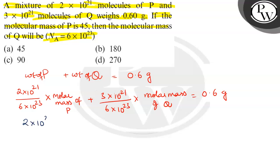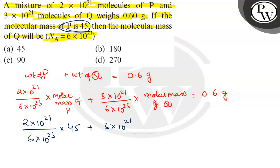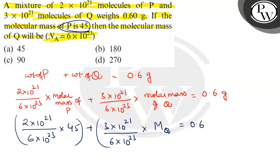So we have: 2 into 10 power 21 divided by 6 into 10 power 23 into molar mass of P, plus 3 into 10 power 21 divided by 6 into 10 power 23 into molar mass of Q — this is what we need to find out. The sum is equal to 0.6. On solving both terms, we get the molar mass of Q is equal to 90. This is our answer.